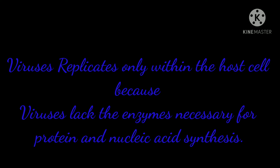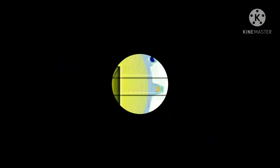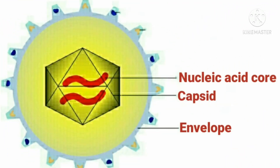Next we will see about its structure. It consists of a nucleic acid core surrounded by a protein coat called a capsid. Some viruses have an outer covering called an envelope. Now you come to know what is a virus and about its structure.